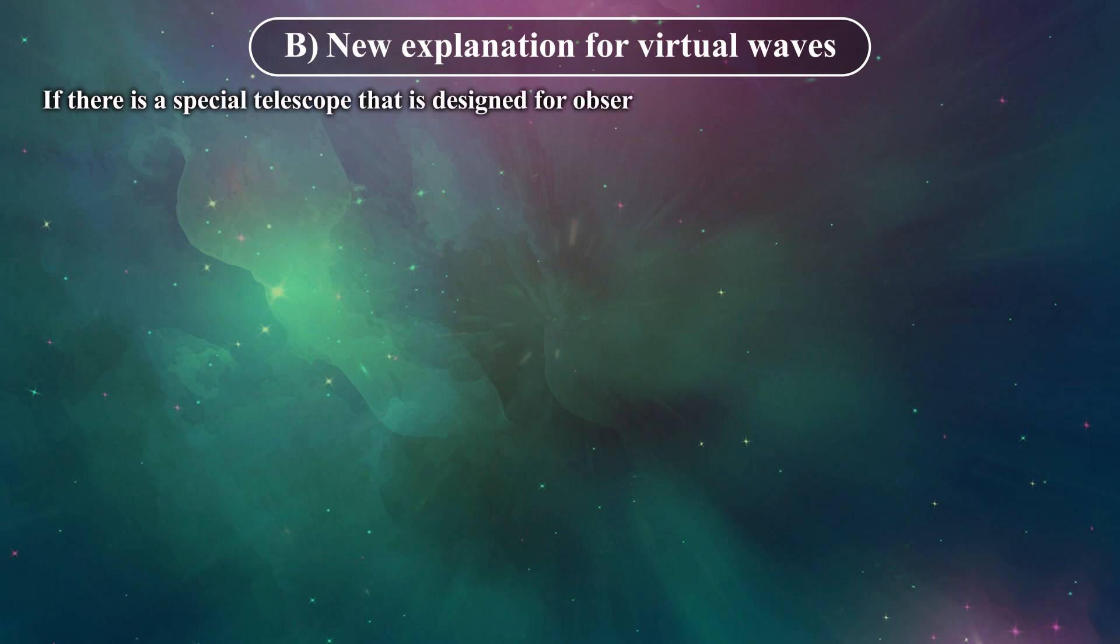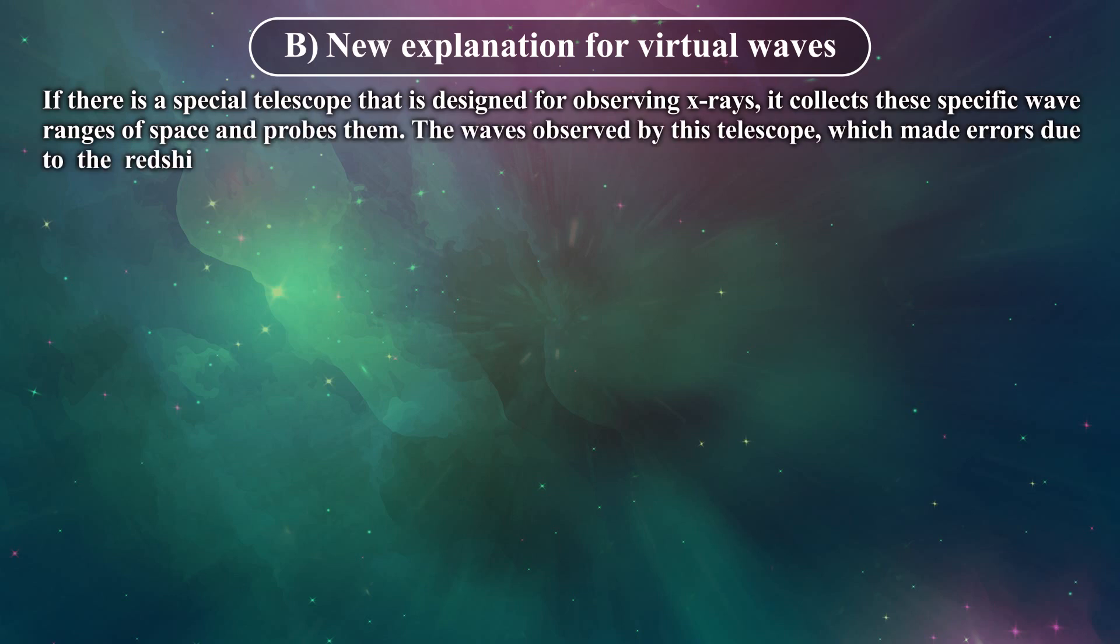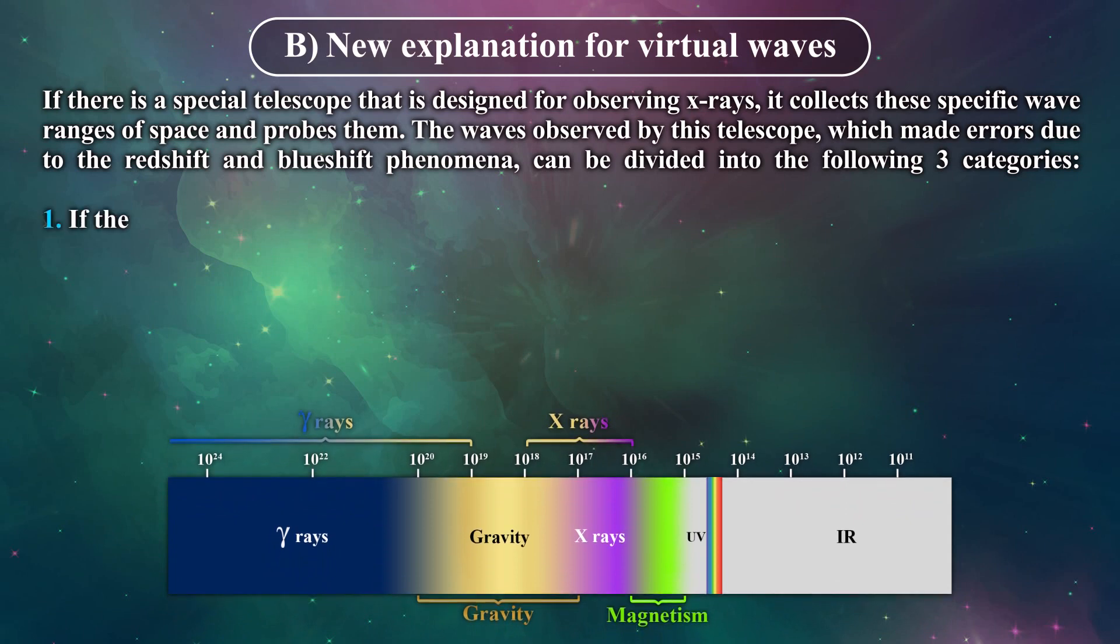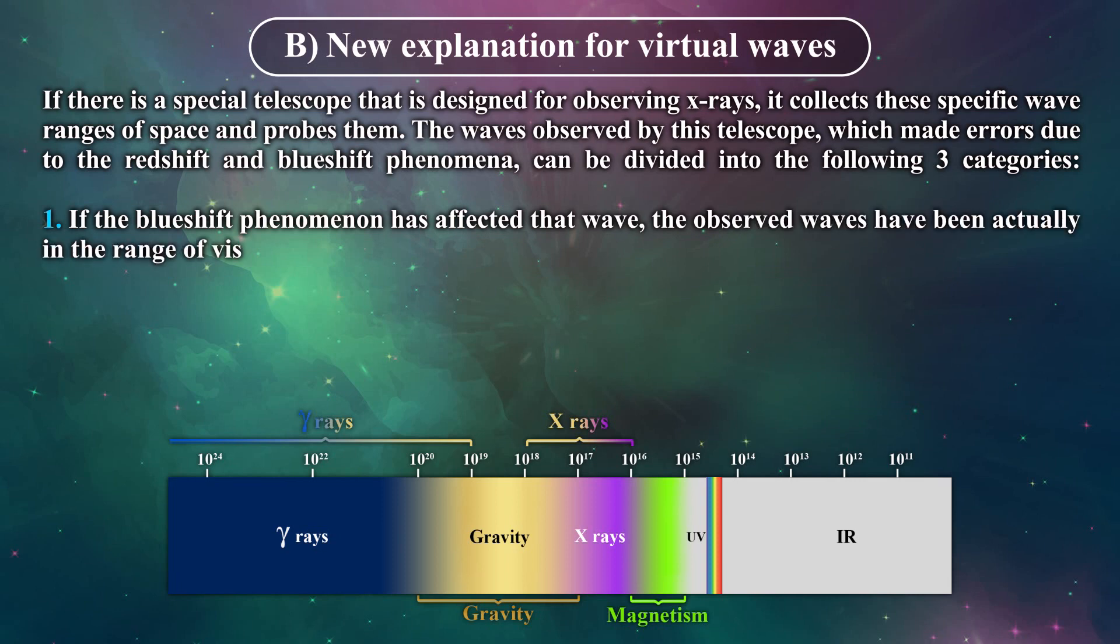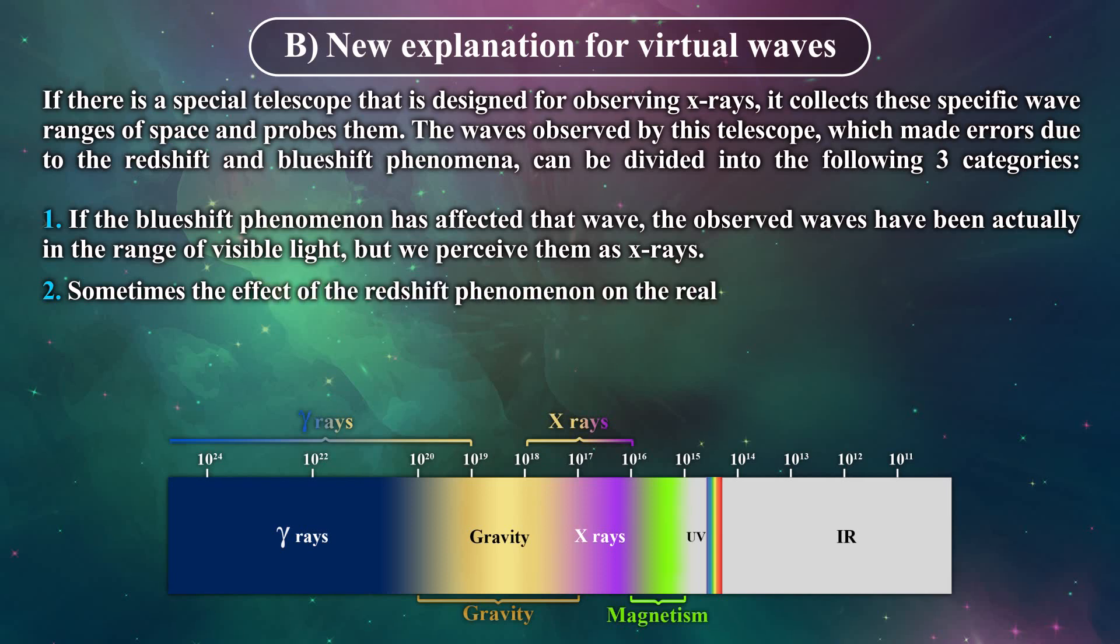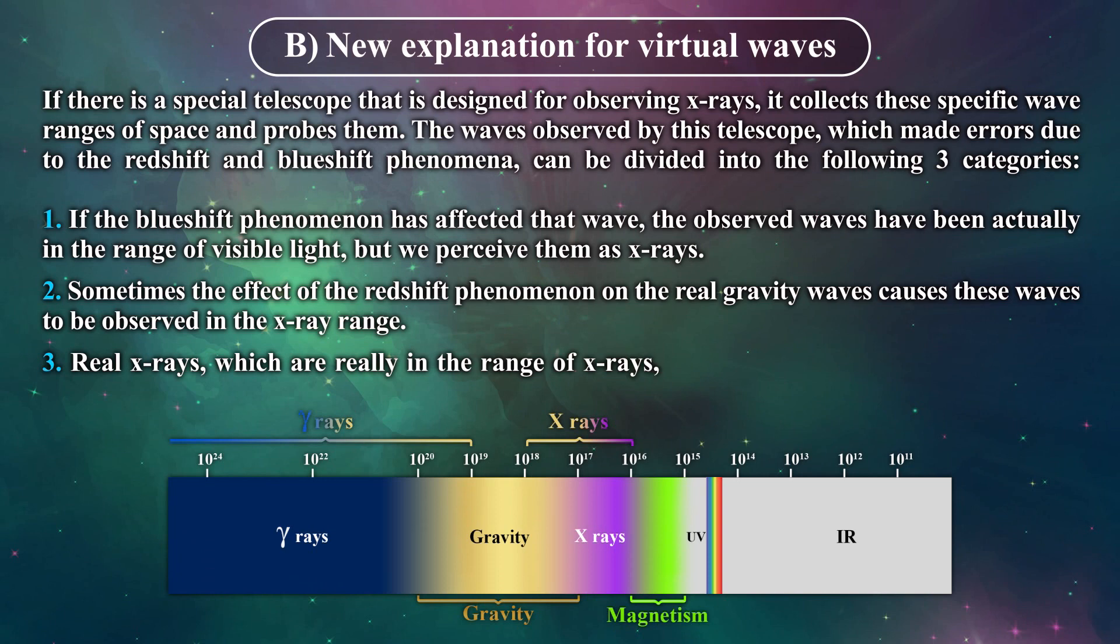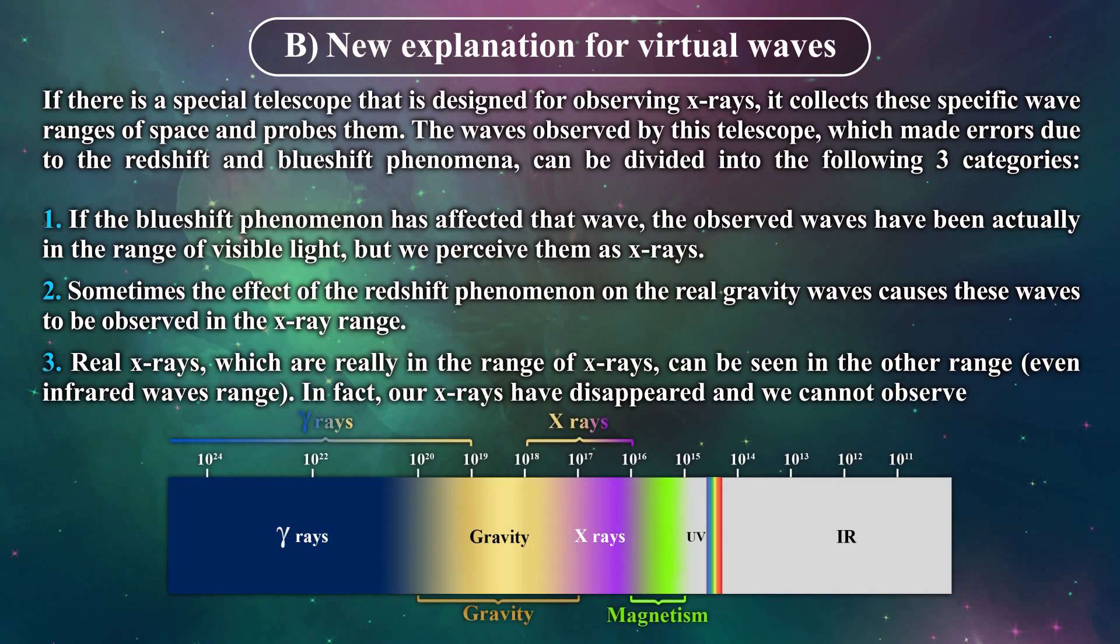If there is a special telescope that is designed for observing X-rays, it collects these specific wave ranges of space and probes them. The waves observed by this telescope which made errors due to the redshift and blueshift phenomena can be divided into the following three categories: 1. If the blueshift phenomenon has affected that wave, the observed waves have been actually in the range of visible light, but we perceive them as X-rays. 2. Sometimes the effect of the redshift phenomenon on the real gravity waves causes these waves to be observed in the X-ray range. 3. Real X-rays which are really in the range of X-rays can be seen in the other range, even infrared waves range. In fact, our X-rays have disappeared and we cannot observe them.